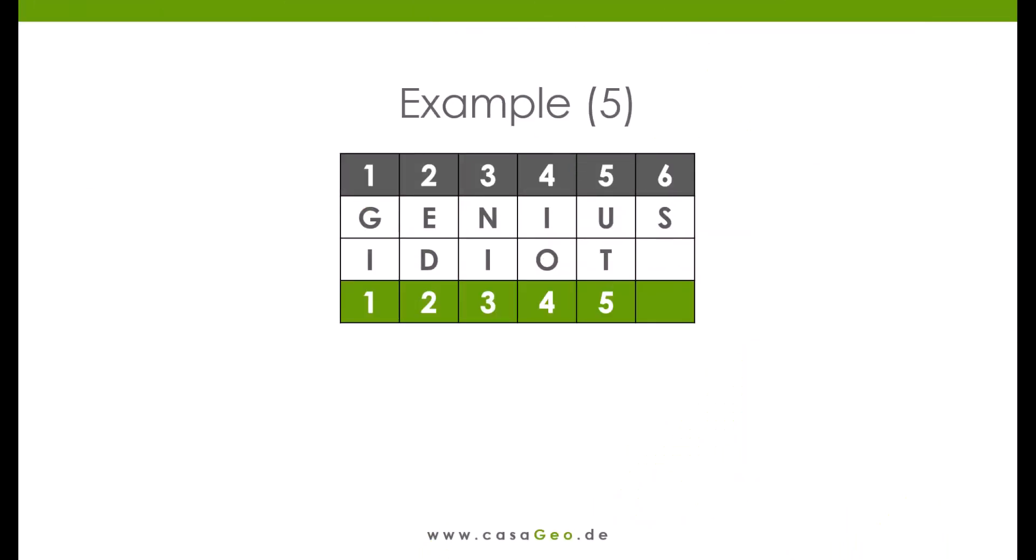Finally, one last example. We enter Genius and idiot as with Levenstein. We get a score of 46.